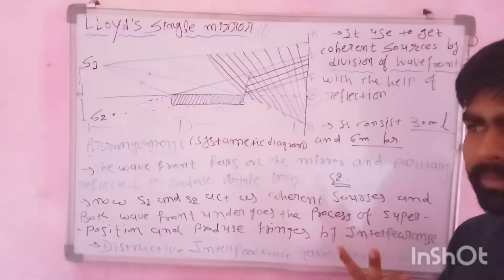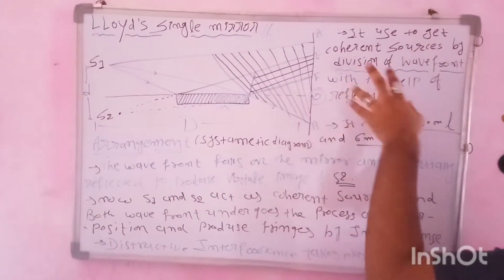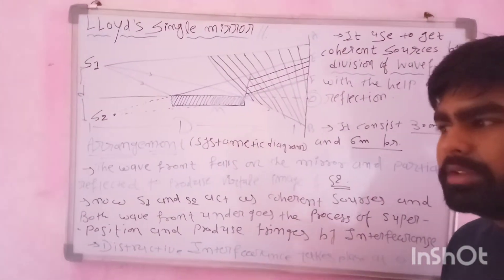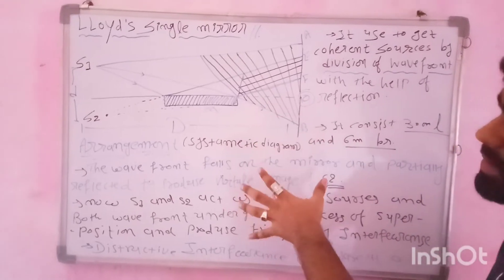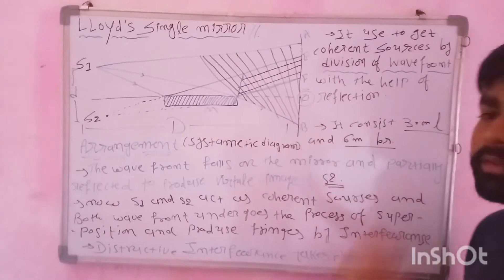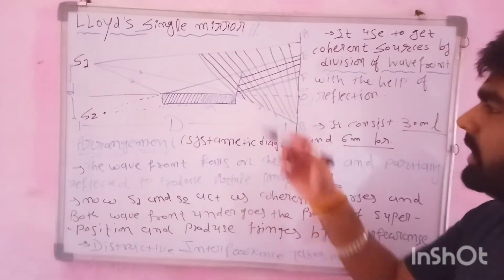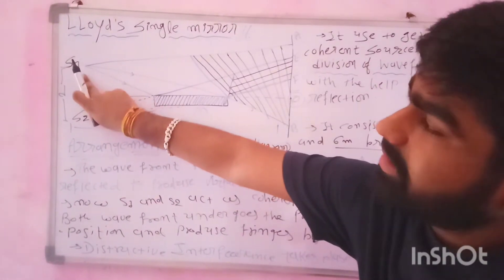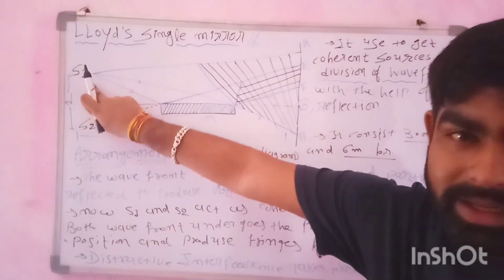First is division of wave front, and second is division of amplitude. This portion is division of wave front because here you can see the coherent source, monochromatic light.